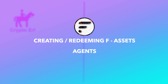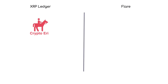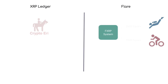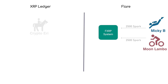Agents. Now let us identify the agents on the Flare network. Agents provide collateral to the system in return for a small commission. In this example, Mickey B Fresh and Moon Lambo both provide 2,500 Spark tokens each into the FXRP system as collateral.